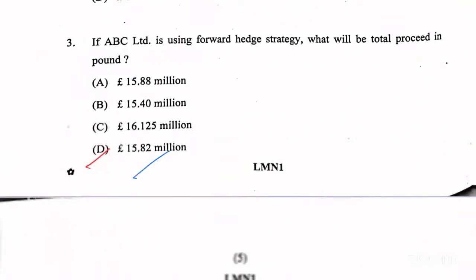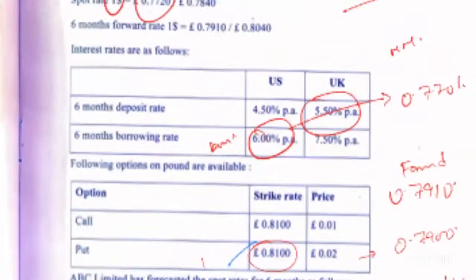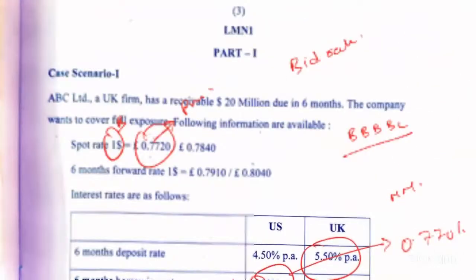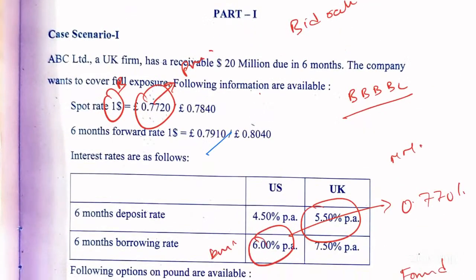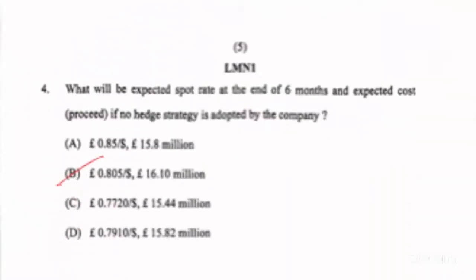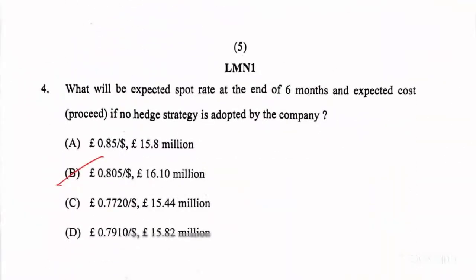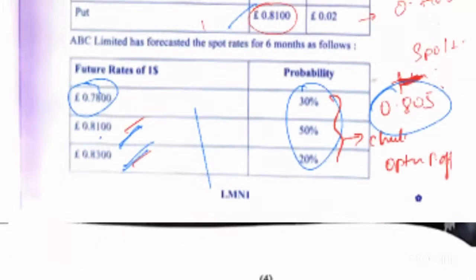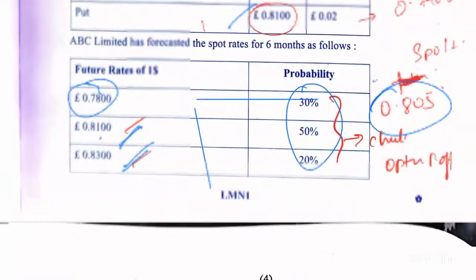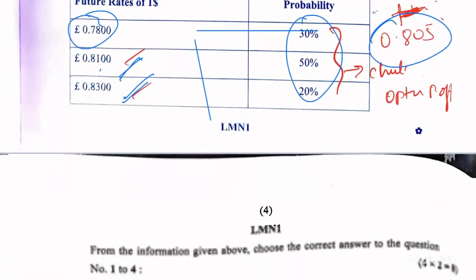Then for the forward, it is simply 15.82. The applicable rate here is the forward rate of 7.791. Then for question four, it will be 0.805, which is the expected spot at the end of six months — basically probability multiplied with these rates for expected future rates, giving you 0.805.